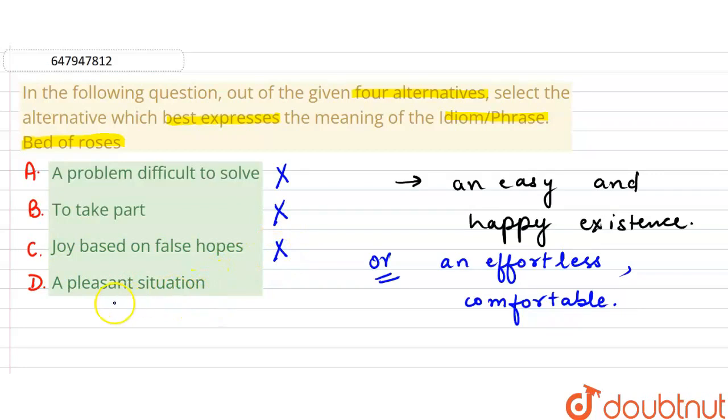We are left with only one option, that is option D. What is a pleasant situation? Pleasant means happy, enjoy. Pleasant is a happy situation when you enjoy in that situation.